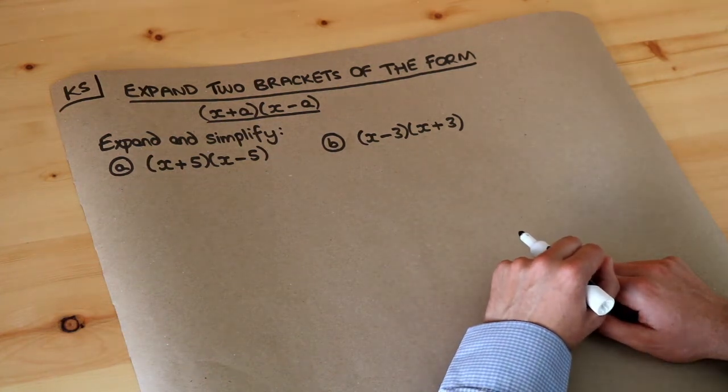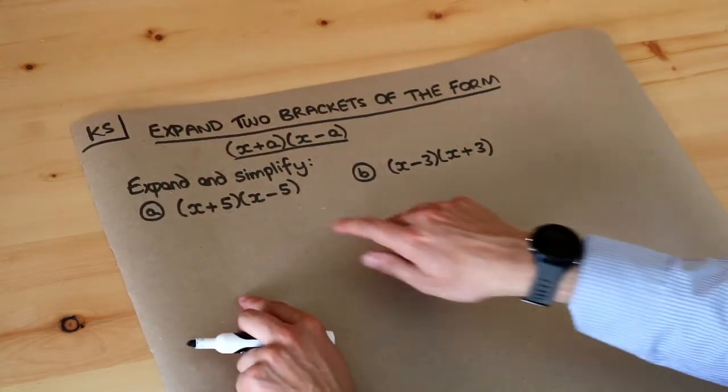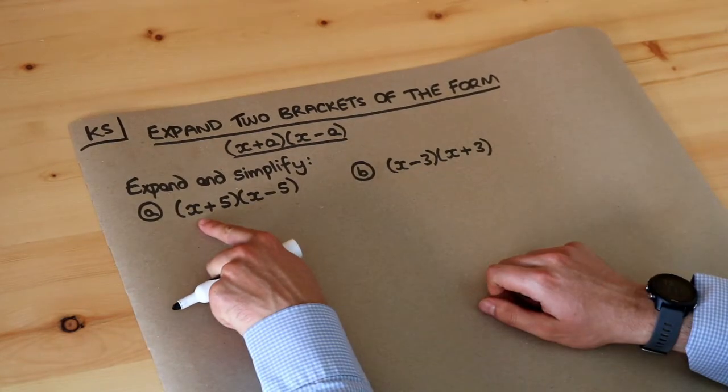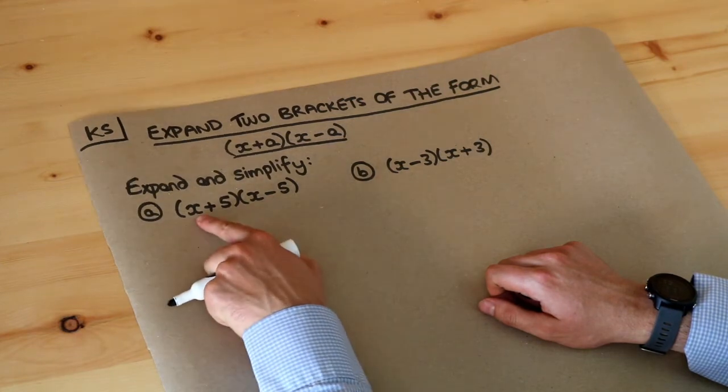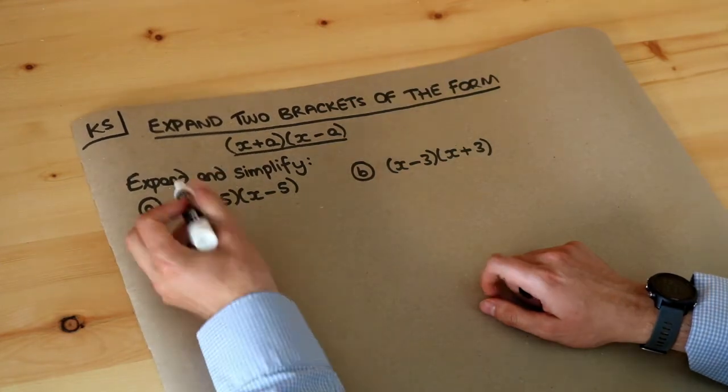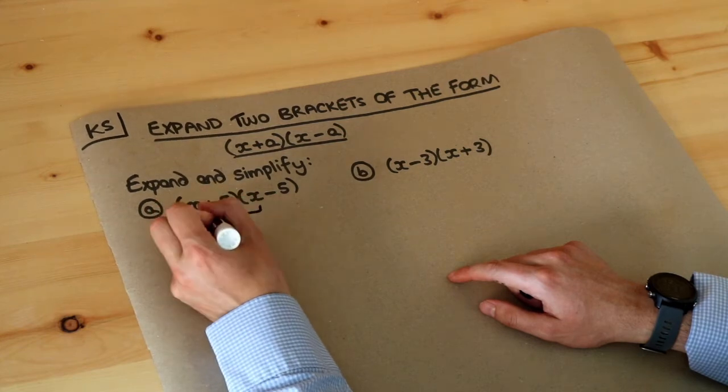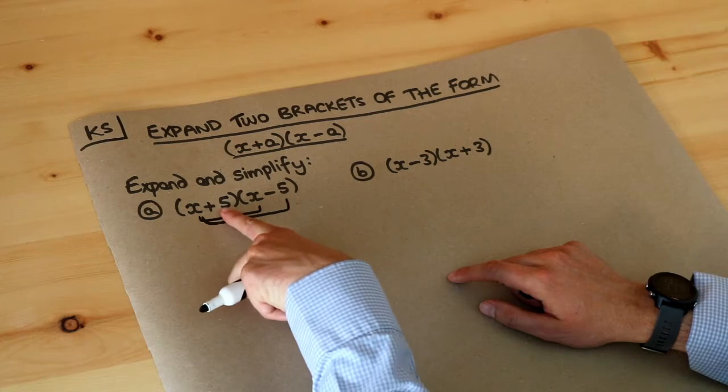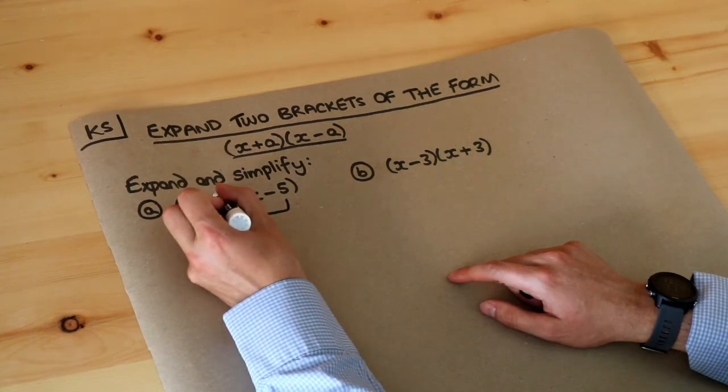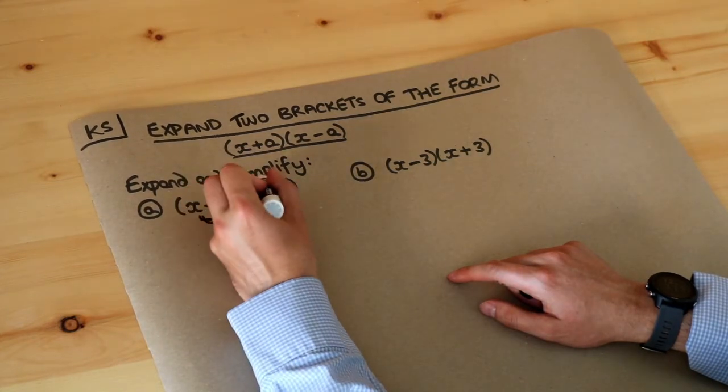So we've seen in a previous video how to multiply out two brackets. We do each thing in the first bracket multiplied by each thing in the second, so that x in the first bracket gets multiplied by each thing in the second bracket, and then the second thing here, the +5, gets multiplied by each of the things in the second bracket.